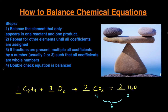So we just went through steps one, two, and three. Step number four is to double check if our equation is balanced. We have two carbons on the left and two carbons on the right. We have four hydrogens on both sides. We have six oxygens here — four oxygens plus two oxygens — so in total we have six. Everything is balanced.